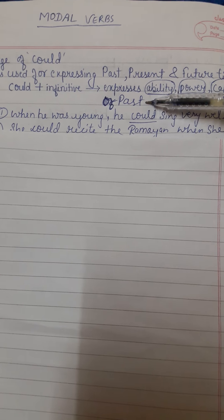So let's begin with the usage of 'could' in the past. The first usage is we can express ability, power, or capacity of the past. Since 'could' is famous for the past, I have started with this usage. We can express ability, power, or capacity of the past using 'could' plus V1.